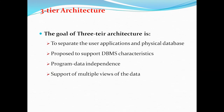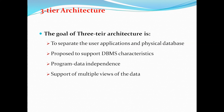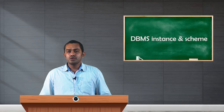By using three-tier architecture we can achieve several advantages. We use it to separate user applications from the physical database and to support database management system characteristics. It also supports data independence — hiding certain data from users — which we will discuss in the next session. It supports multiple views, allowing multiple users to simultaneously access the database without interruption by separating the data, server side, and client side into different layers. Because of this, it is the most widely used database architecture in application programs. Thank you.